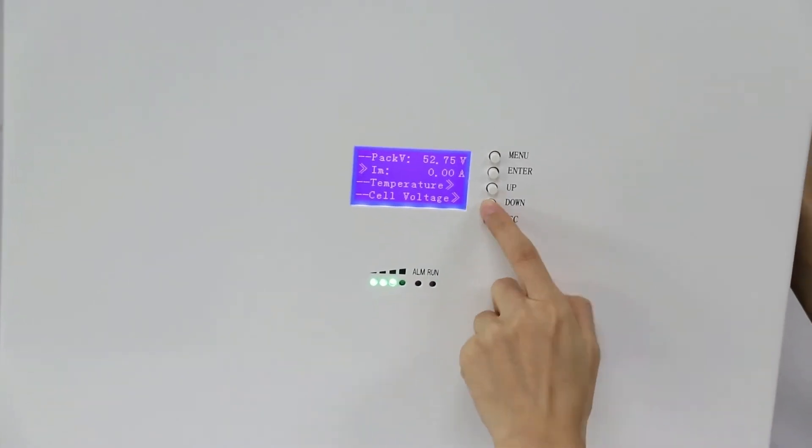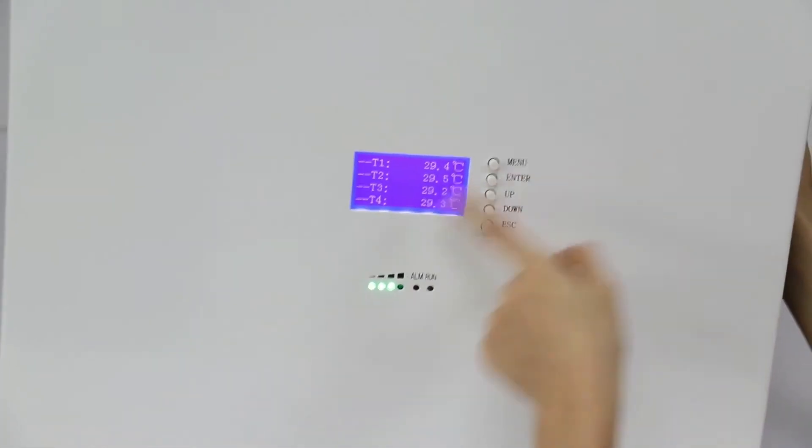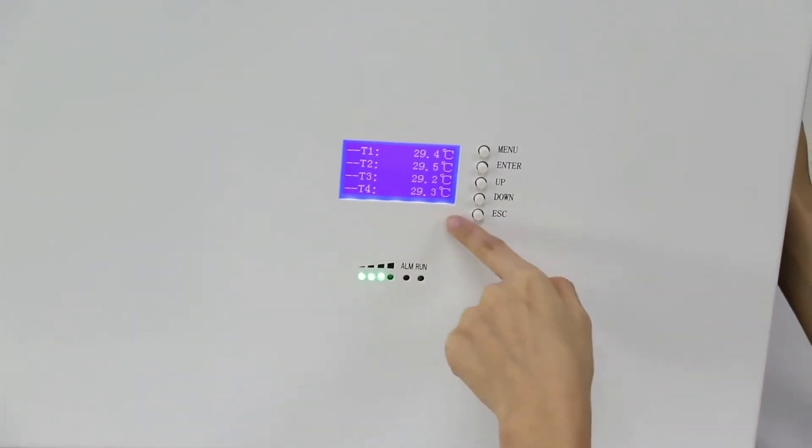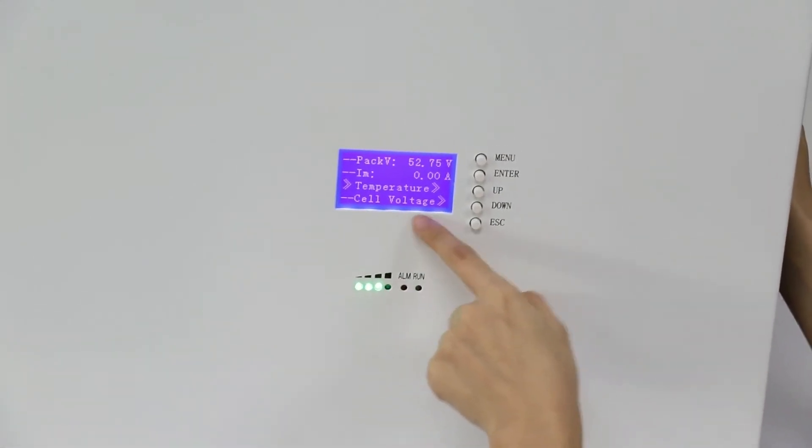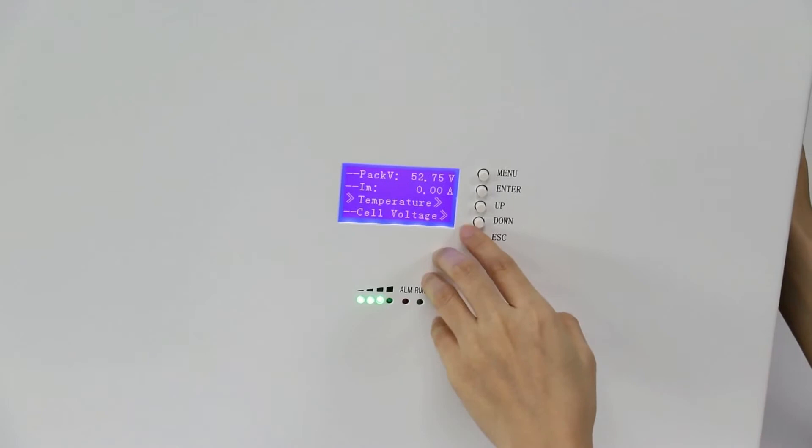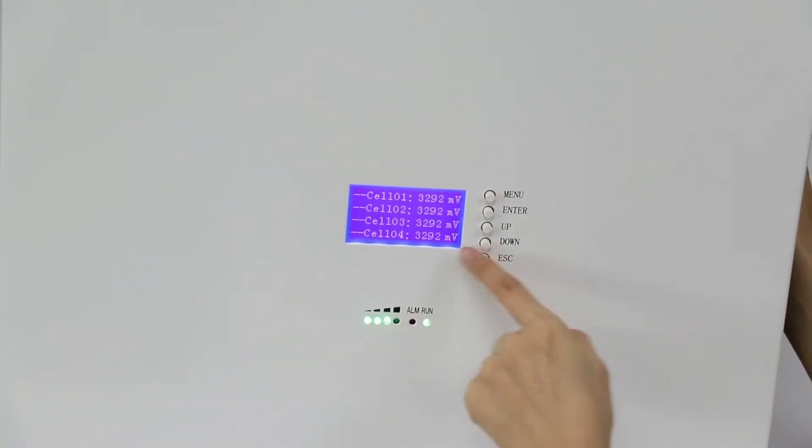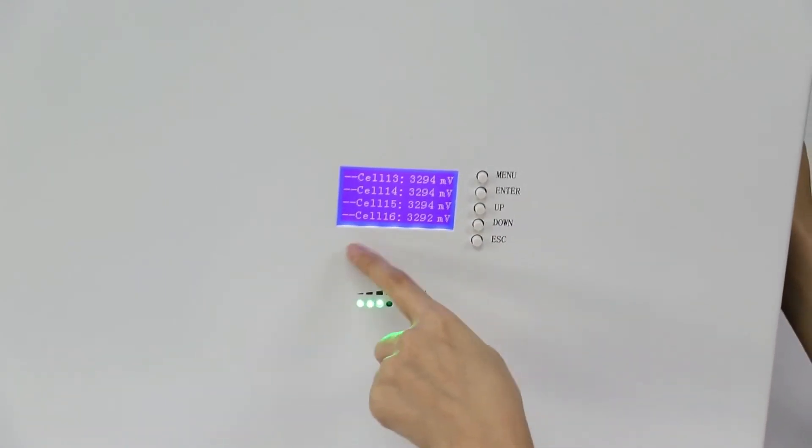When you want to see the temperature of the batteries, you can press this one, and then you can see all cells pack temperature. If you want to see the cell's voltage, you can press this, and then you can see each cell's voltage. Here you can see the 16 cells.